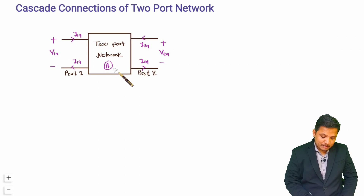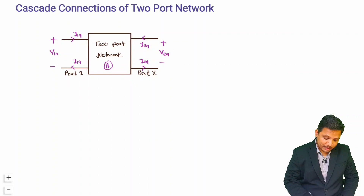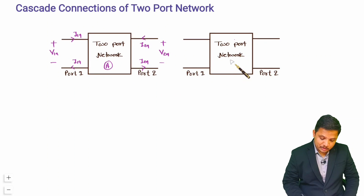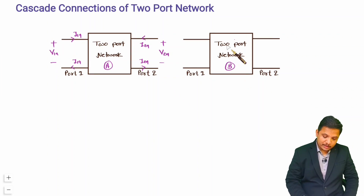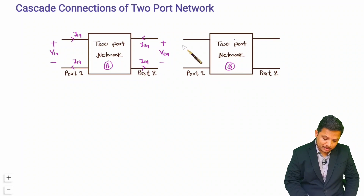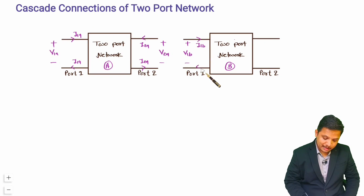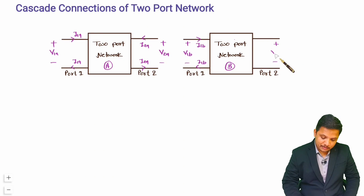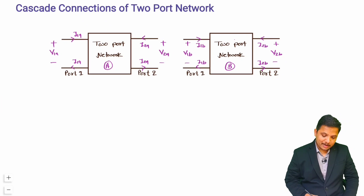Now I'll consider a second two-port network. Let us say this is two-port network B. At port 1 of two-port network B we have voltage V1B, current going inside is I1B and current coming out is I1B. At port 2 we have voltage V2B, current going inside is I2B and current coming out is I2B. That is how we have two different two-port networks.